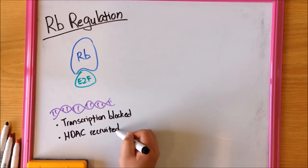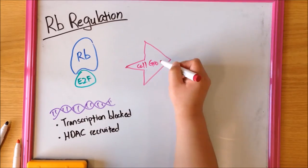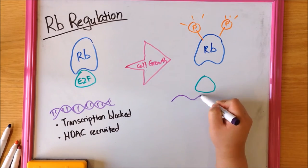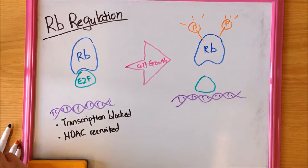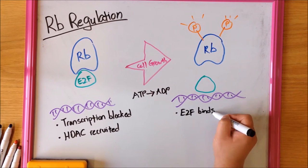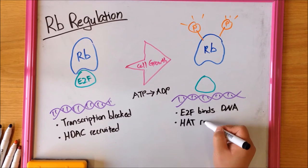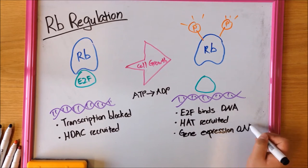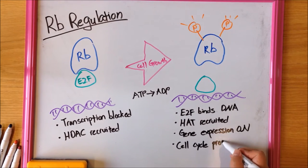As the cell progresses through G1, CDKs phosphorylate RB. This inactivates RB, allowing E2F to switch on cell cycle machinery. This is done by recruiting histone acetylases, which acetylate histones and causes changes in the chromatin structure. This allows DNA to be transcribed, thus allowing the cell to progress through the cell cycle.